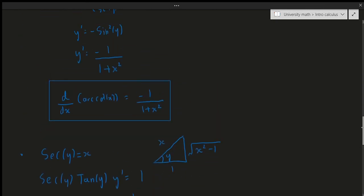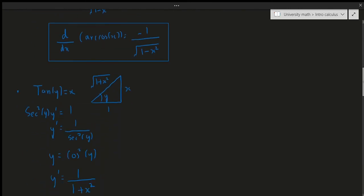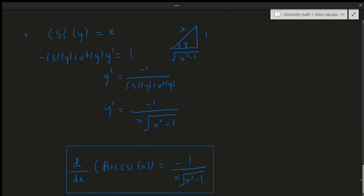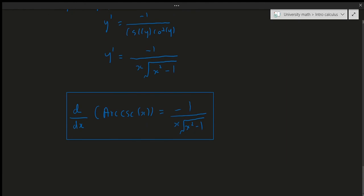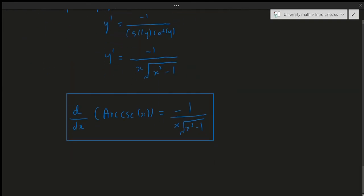All the boxed formulas — derivative of arc sine, arc cosine, arc tangent, arc cotangent, arc secant, and arc cosecant — are the ones you need to memorize if you choose to. However, I would rather just derive them quickly, because the derivations are fast and the formulas come naturally if you understand the method. In terms of examples, I'll be doing those in the next video. This video was just about deriving these formulas. I hope this video helped — please like, comment, and subscribe, and leave any questions in the comments. Have a great day.